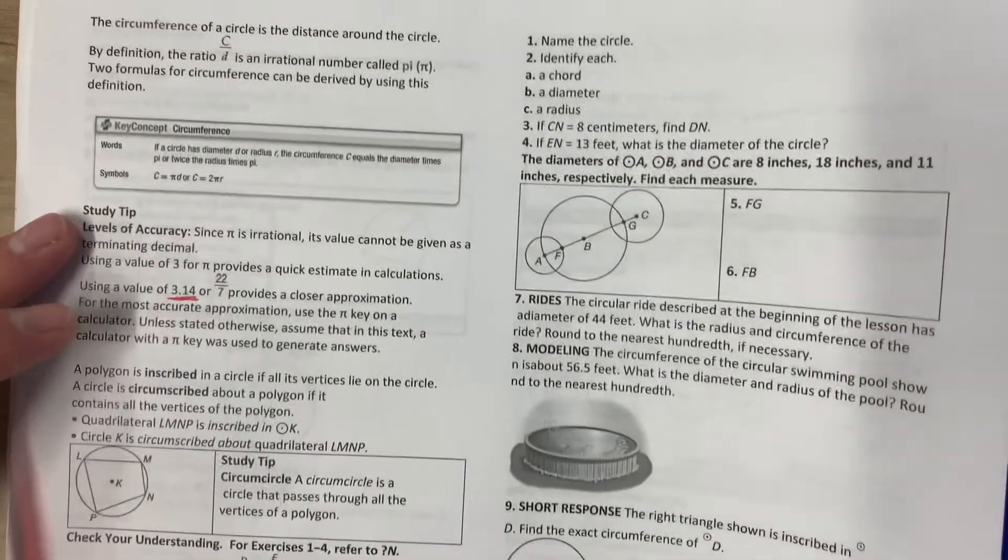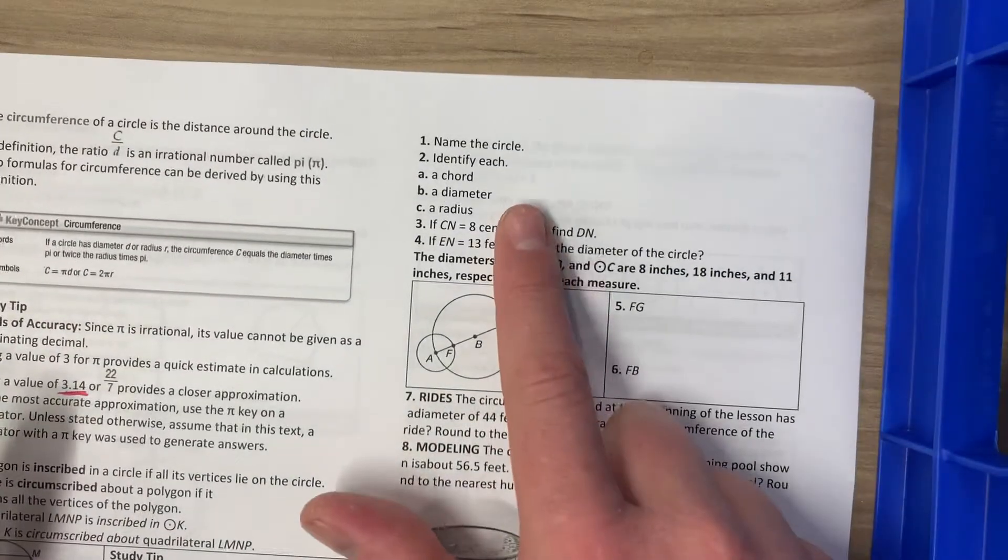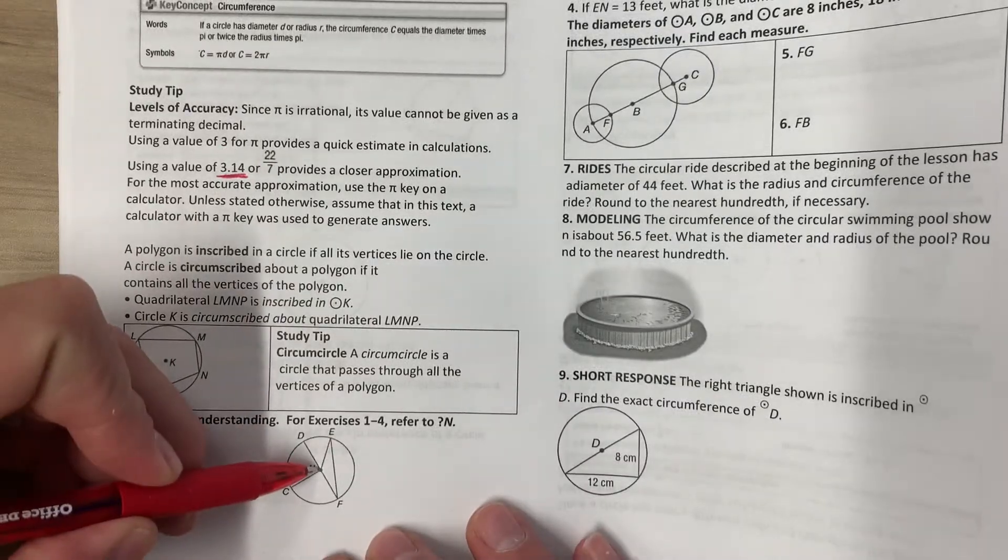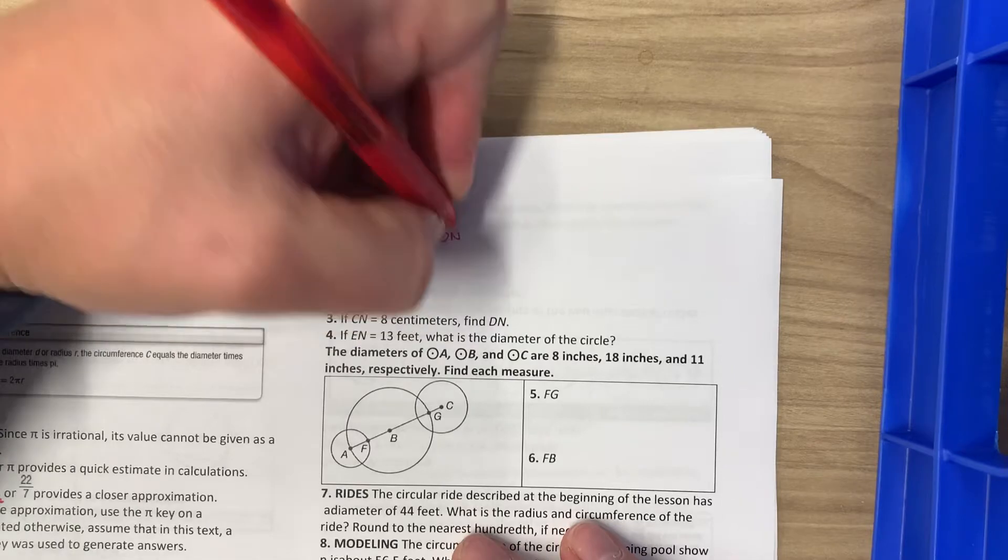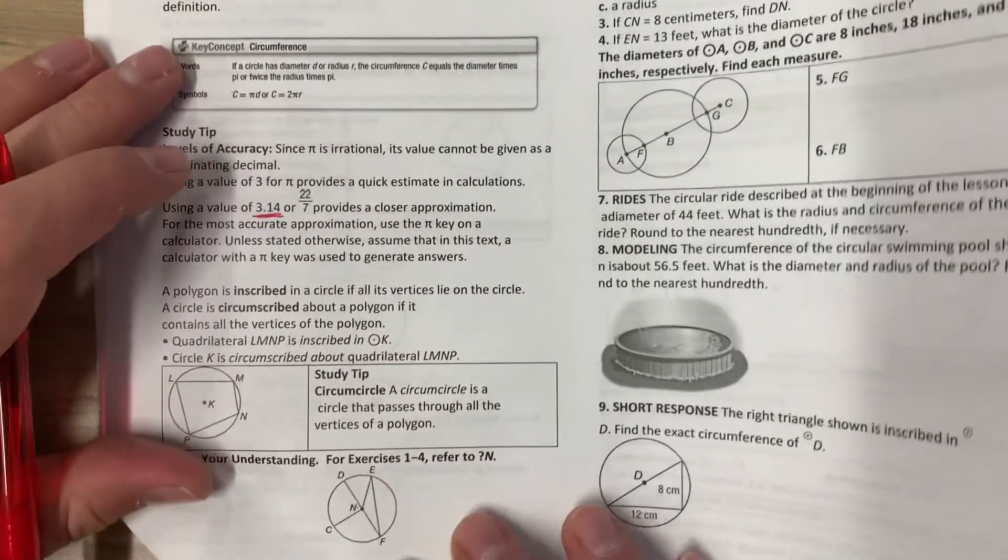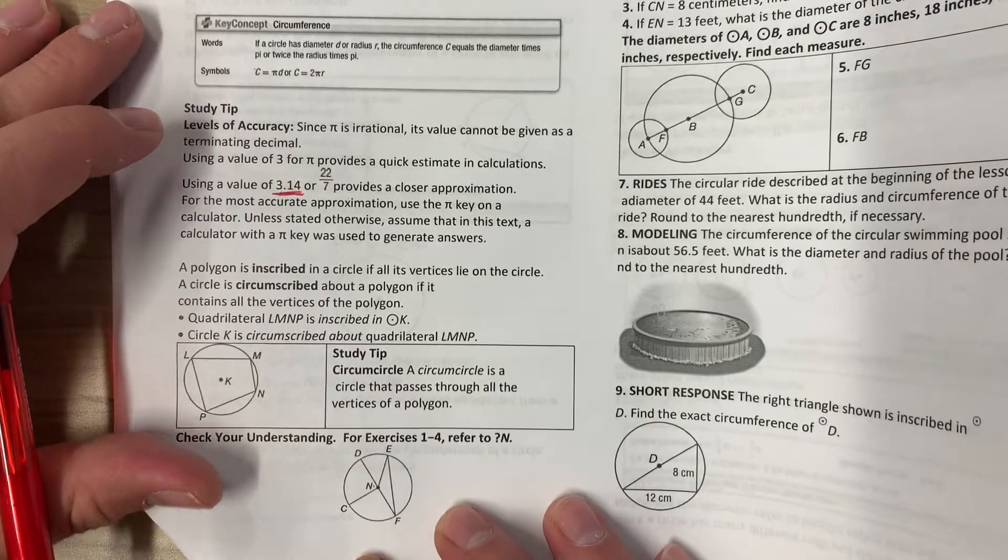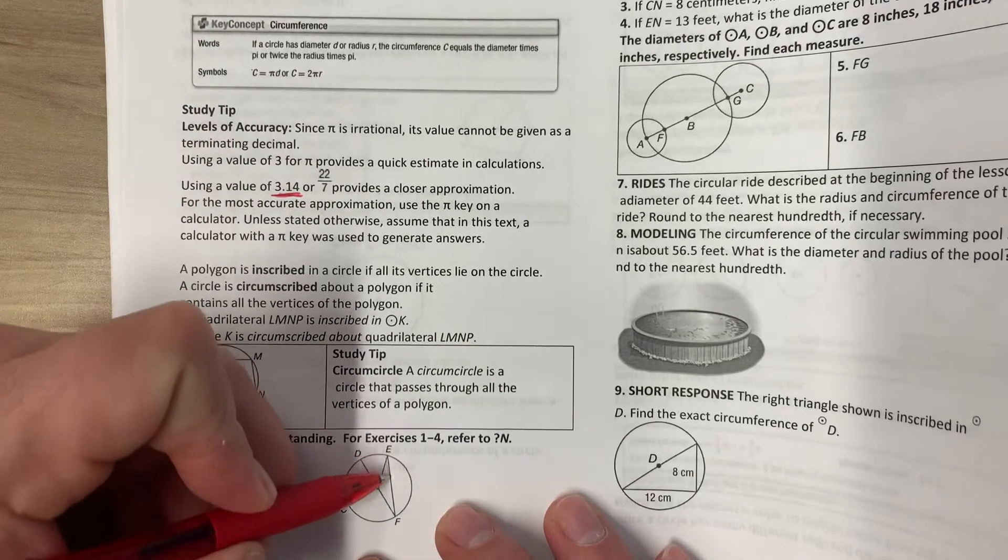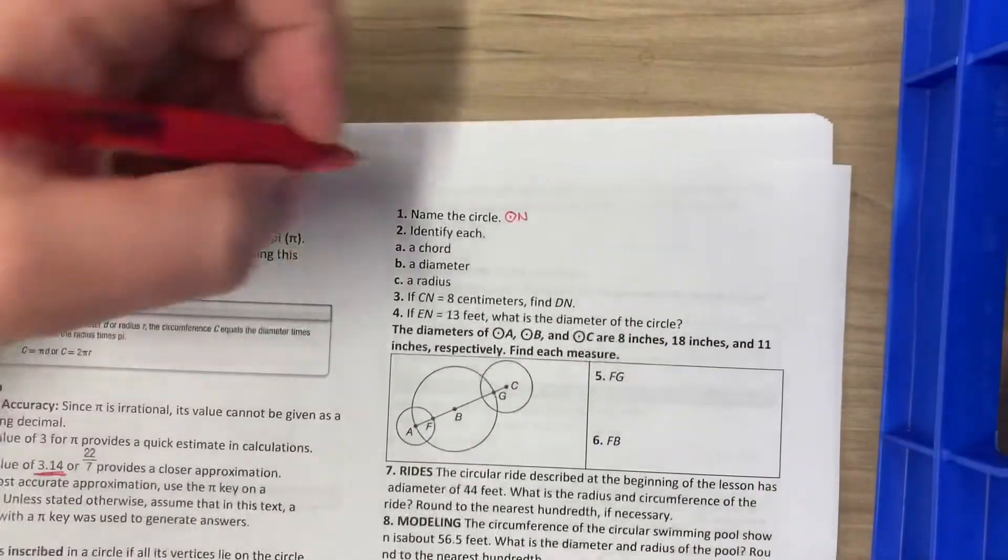For problems 1 through 4, we're using this circle to answer these questions. Naming the circle, we always name it by the center. The center is N, so circle N is our name. Identifying a chord: a chord is just a segment with endpoints on the edges. We've got EF is one chord, and DF is another chord.